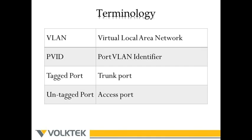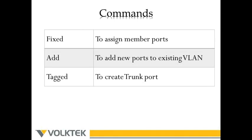Let's look at the terminology used in this video. VLAN means virtual local area network. PVID means port VLAN identifier. A tag port is a trunk port, and an untag port is an access port. A few commands are used in this video: fixed, add, and tag. The command fixed is used to assign member ports to a VLAN, add is used to add new ports to an existing VLAN, and tagged is used to create a trunk port in a VLAN.